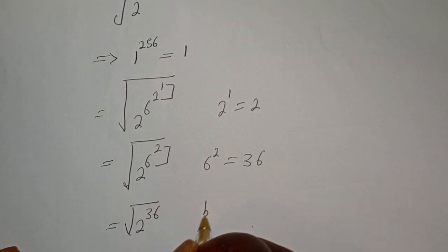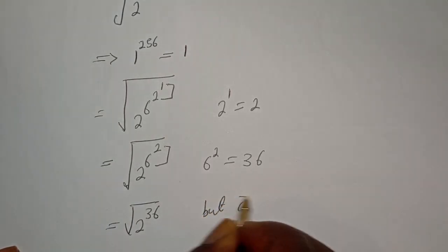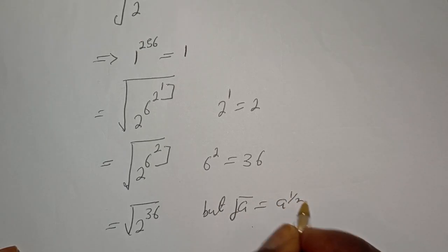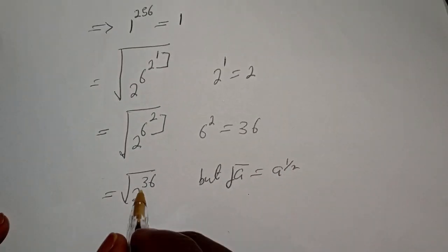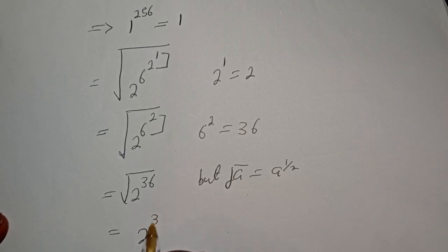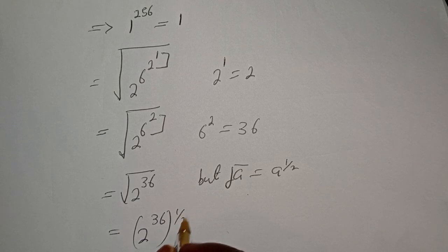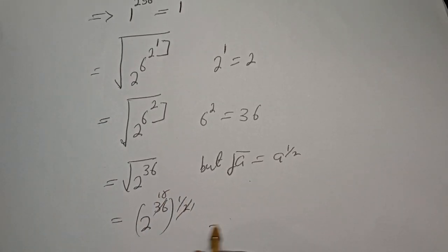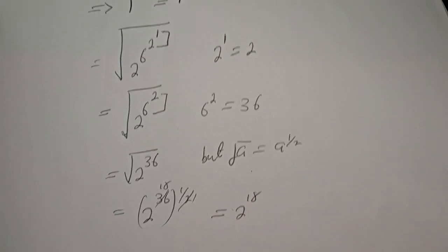Now, if you have the square root of a, this is equal to a raised to power 1 over 2. Then this can be written as 2 raised to power 36, to the power of 1 over 2. Multiplying the exponents: 36 times 1/2 gives 18. This is equal to 2 raised to power 18.